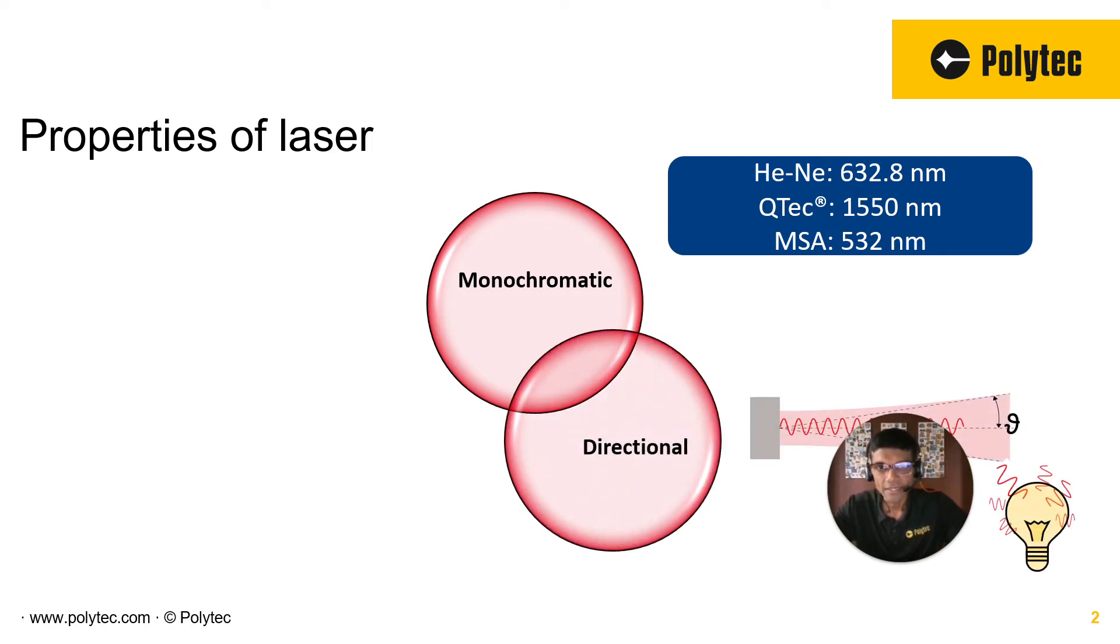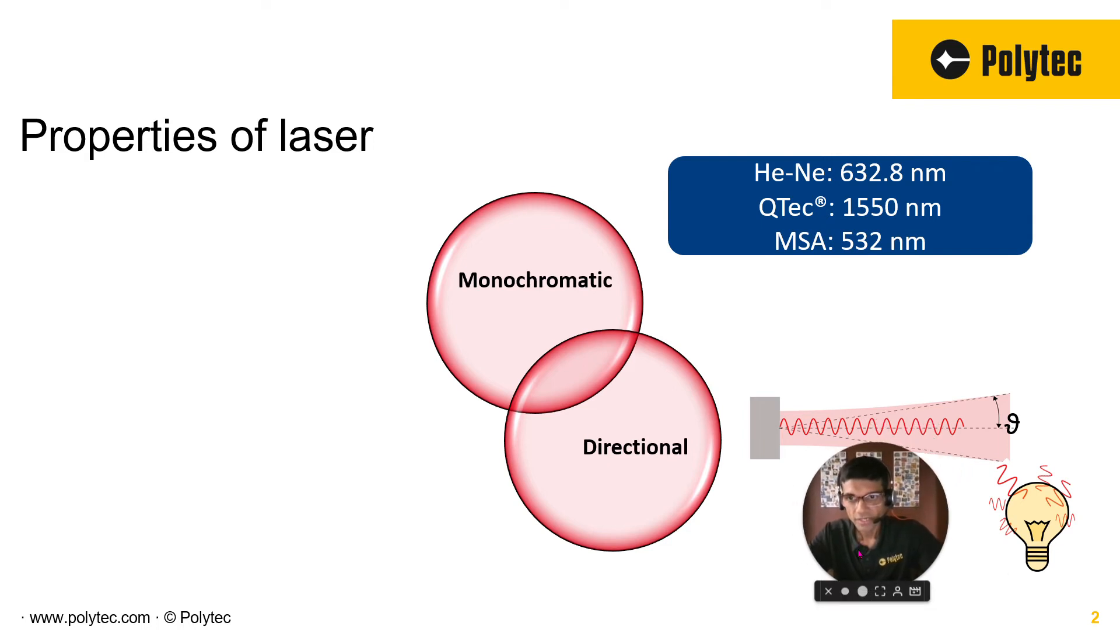The second one is directional. Laser is directional, as you can imagine, as opposed to a light bulb or a white light source, which has all kinds of frequencies and it's everywhere. You cannot focus it, you cannot point it. And for vibration measurements, pointing it where you want to measure is of course critical. But it also is one of those fundamental properties that is very important for making it work in a vibrometer. And it has a very short divergence angle, as you can see here. So it kind of goes exactly where you point it.